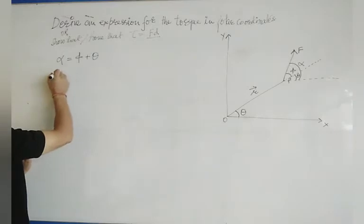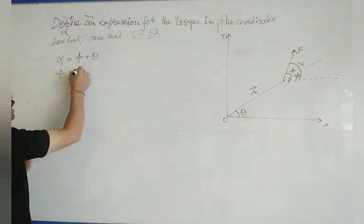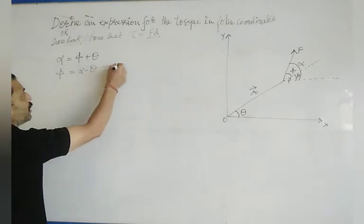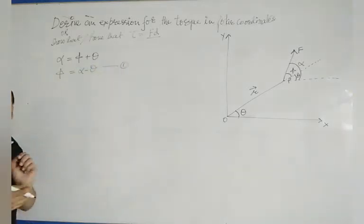If you remove phi from here, then phi will be alpha minus theta. This equation number 1.